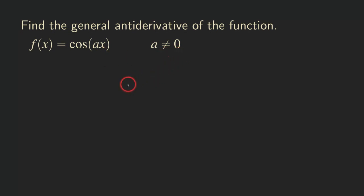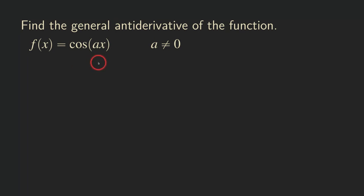First, let's talk about what happens when a is equal to 0. If a is equal to 0, then we have cosine of 0x, which is really just cosine of 0, and that's 1. So our function becomes a constant function, and that's not what we want to talk about in this video.